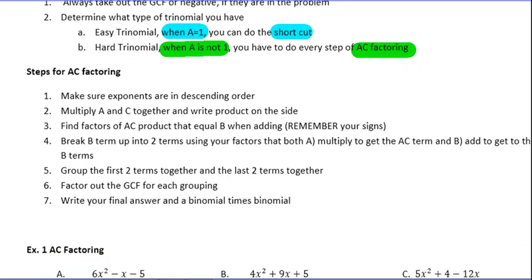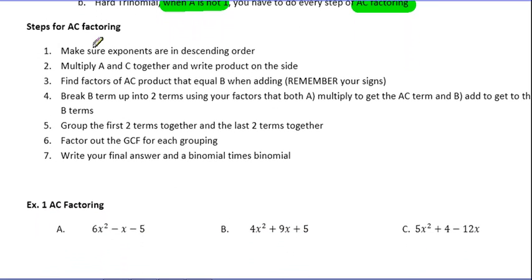So, here is a list of steps for AC factoring. Step number one is we have to make sure we're in descending order. Nothing new there. We've been doing that since the start of this unit. We're going to multiply A and C together and write the product on the side in the MA chart. We're going to find factors of AC that equal B. We're going to break up the B term using the factors.